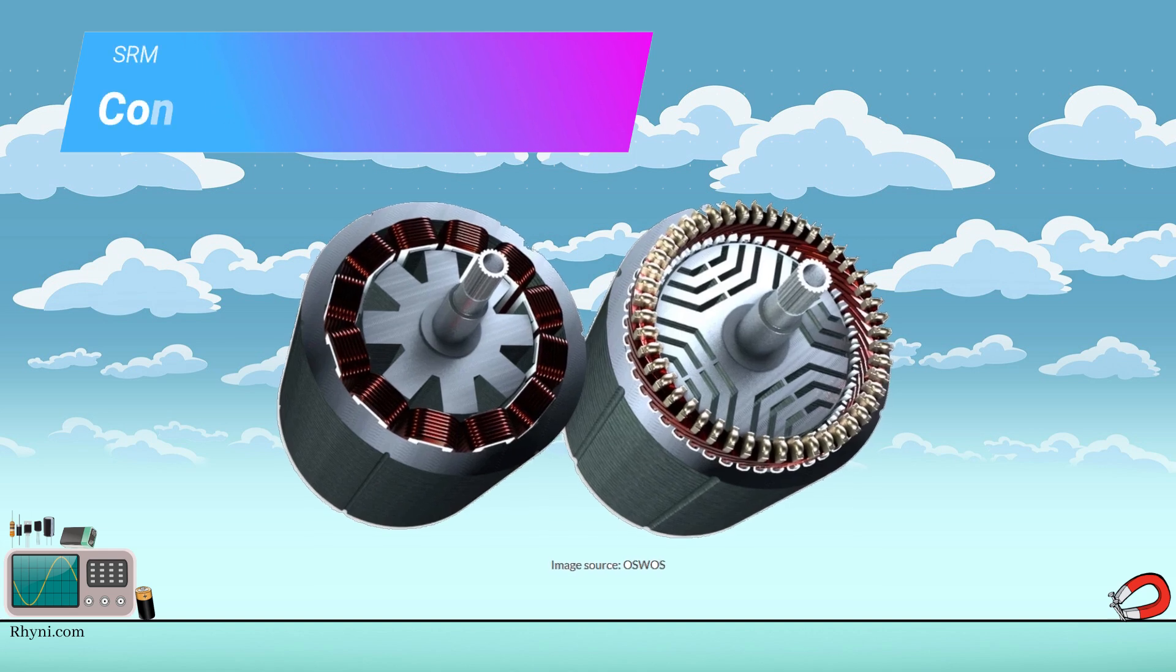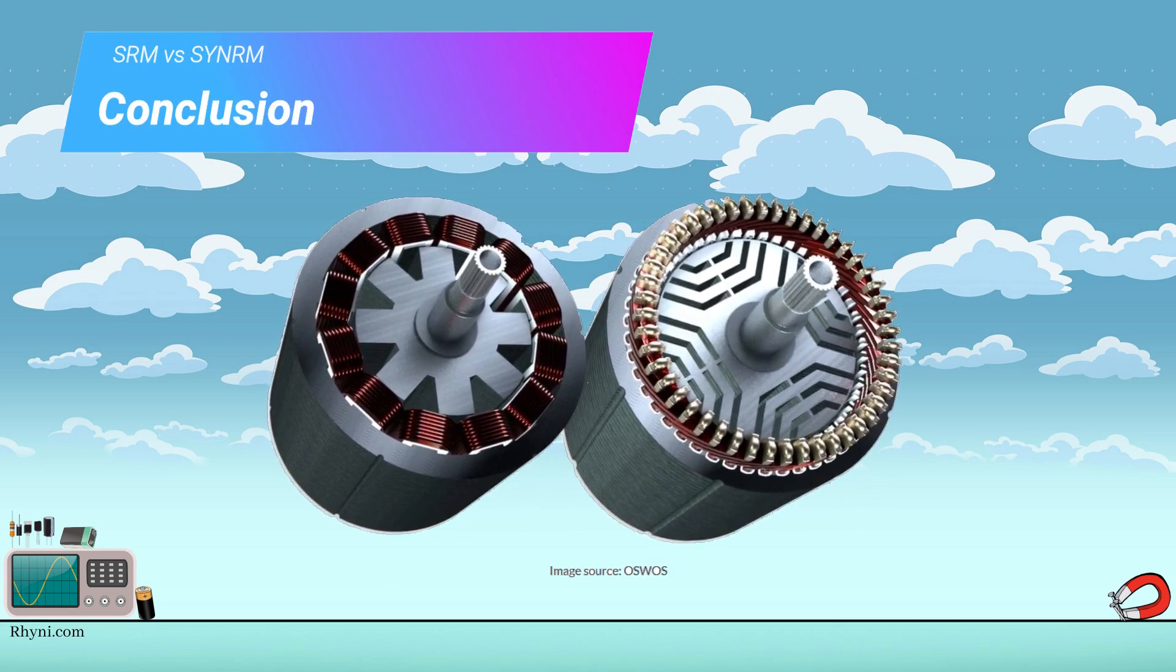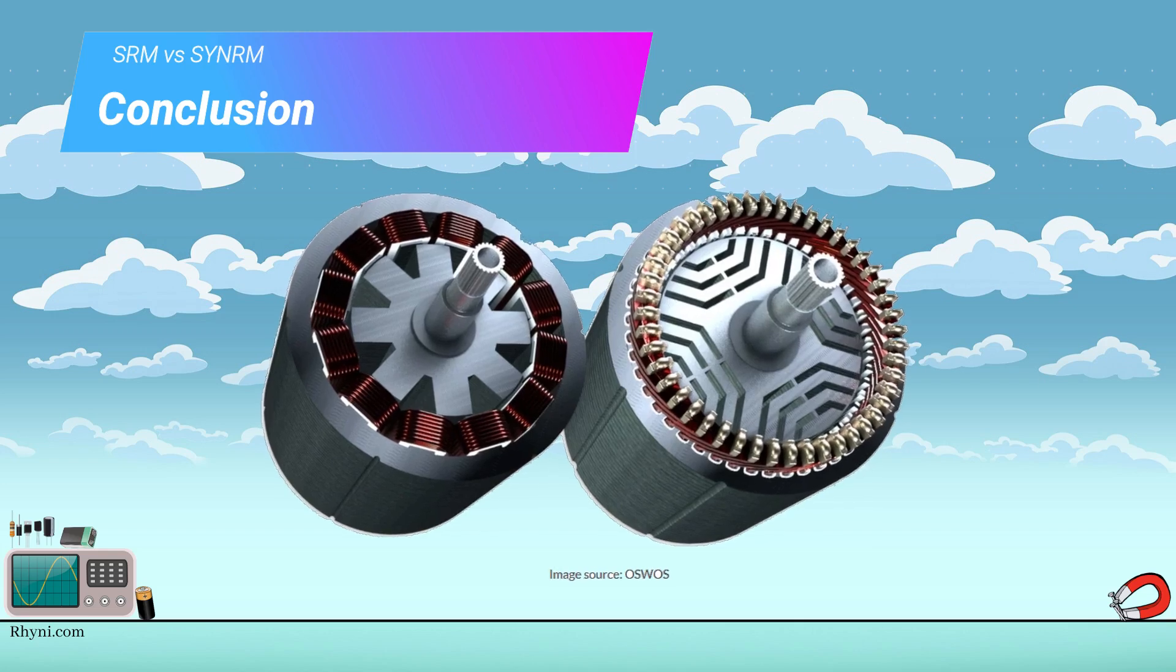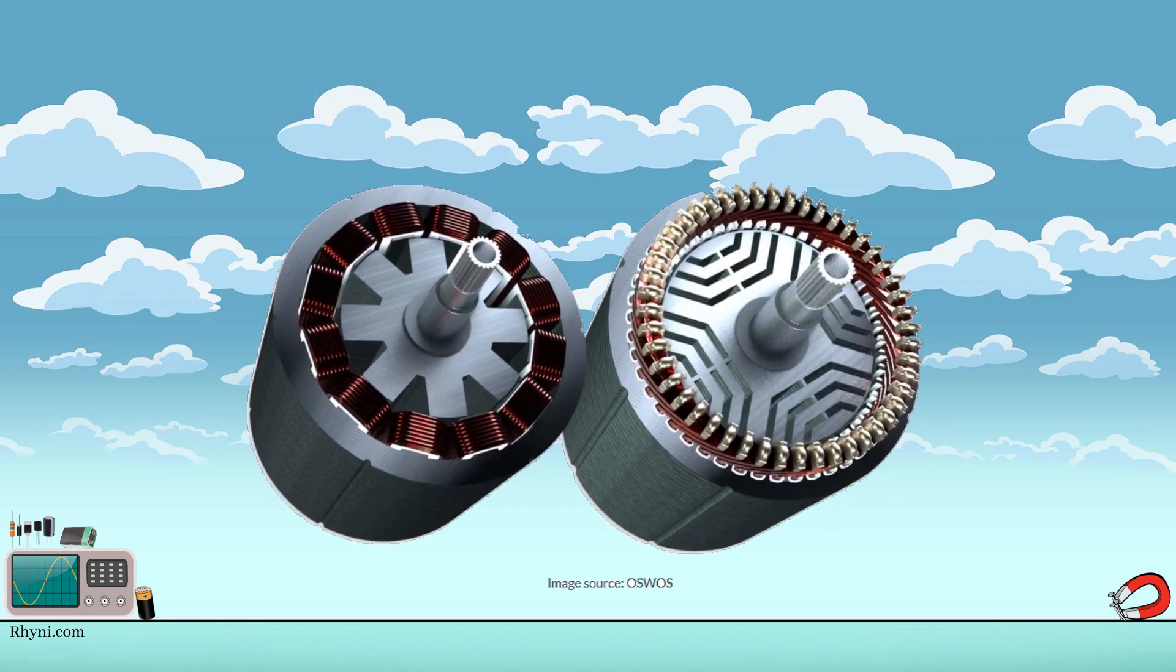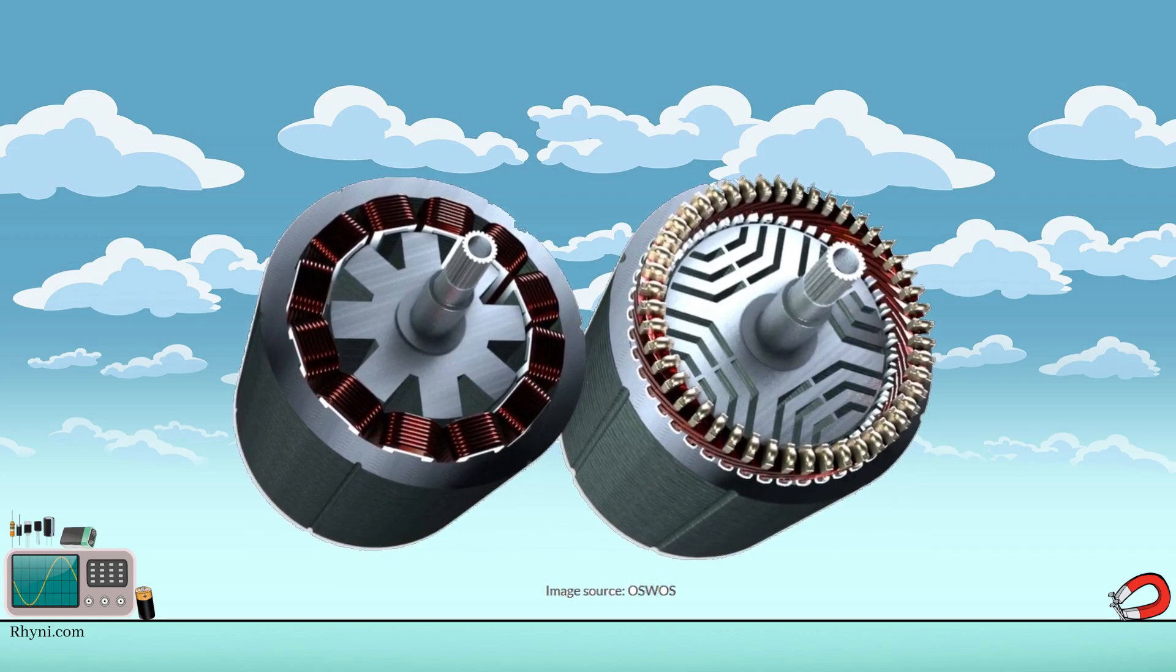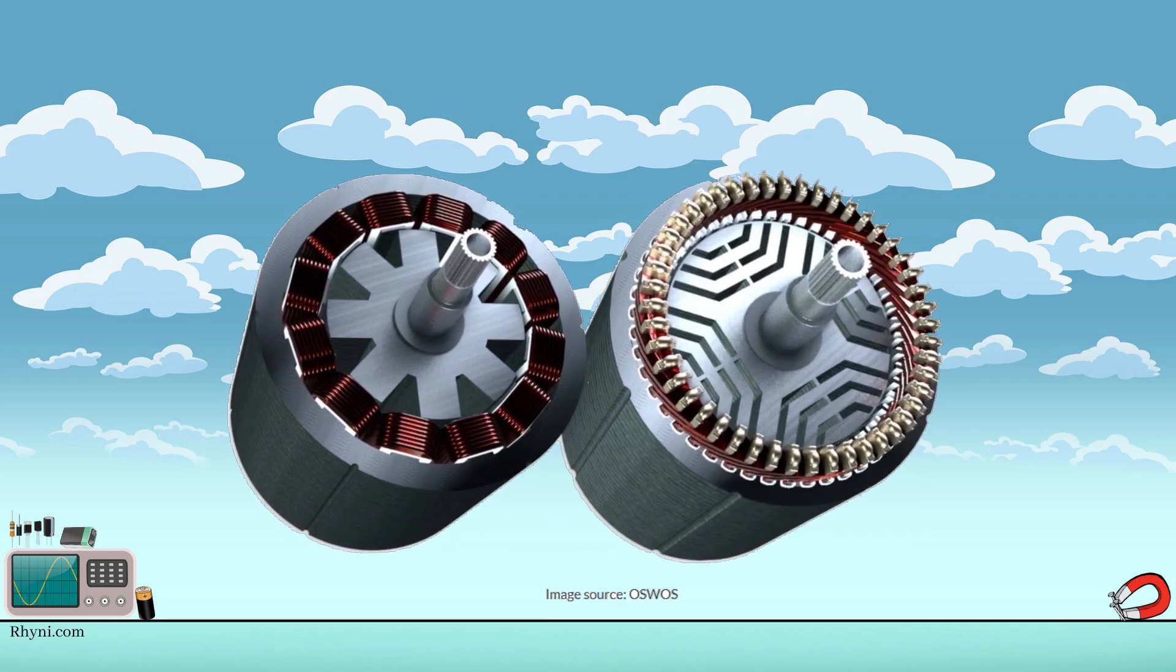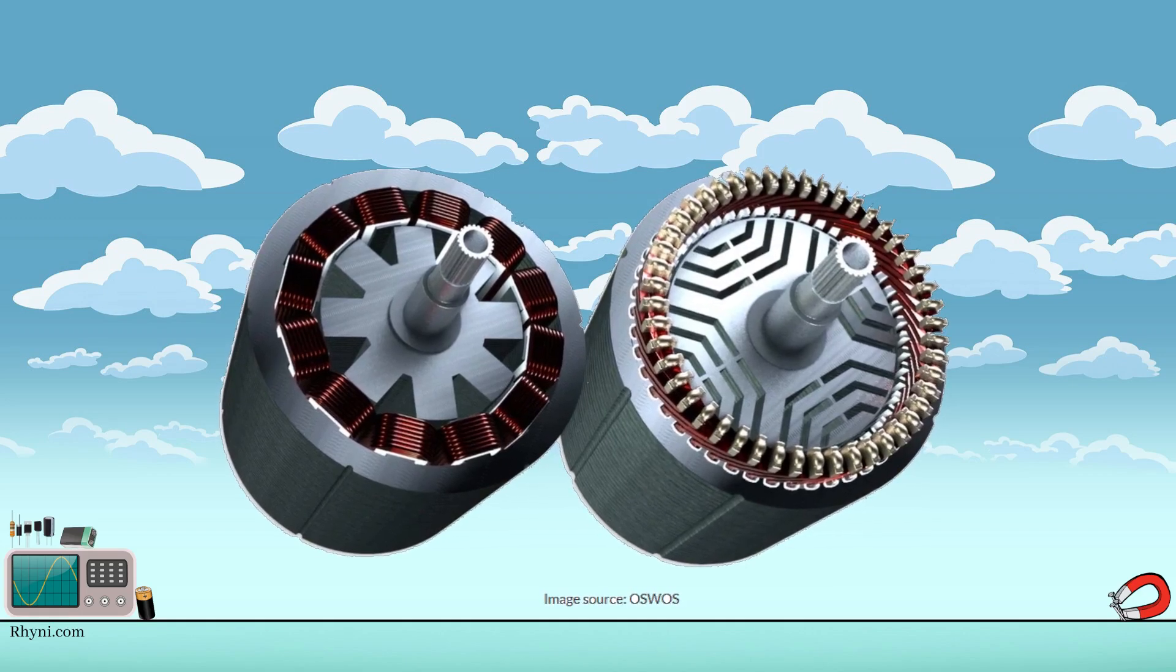Conclusion. Overall, while both synchronous reluctance motors and switched reluctance motors have their advantages and disadvantages, their differences in working principle, rotor design, control mechanism, efficiency, power factor, torque ripple, and speed control make them suitable for different applications.